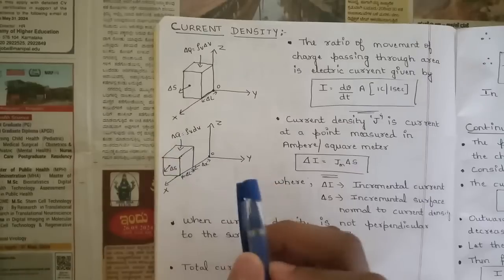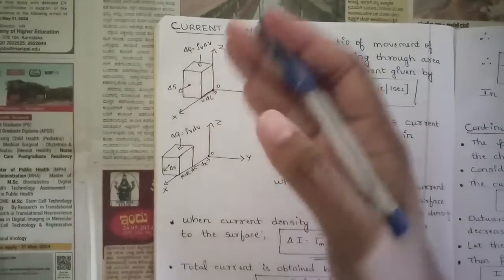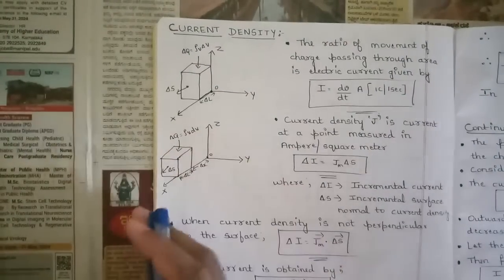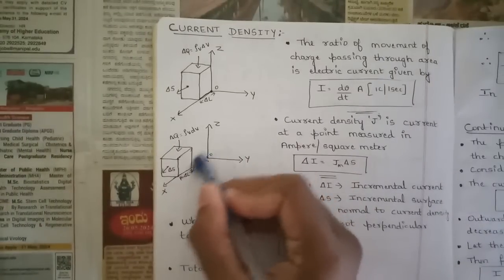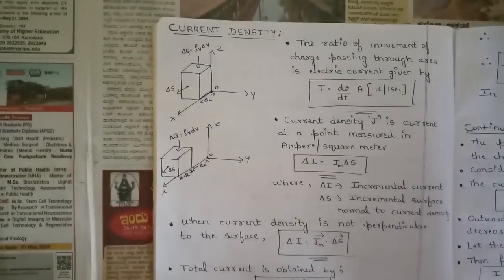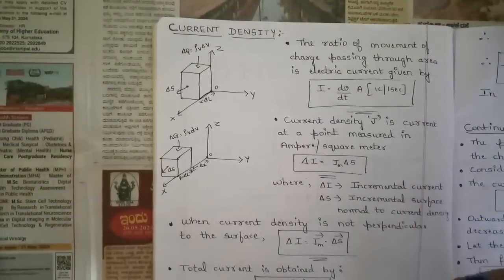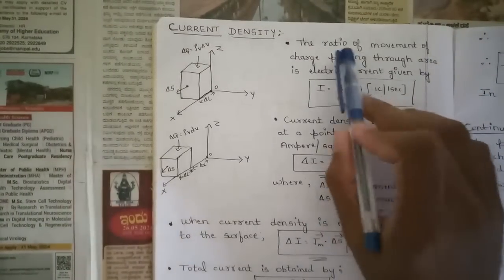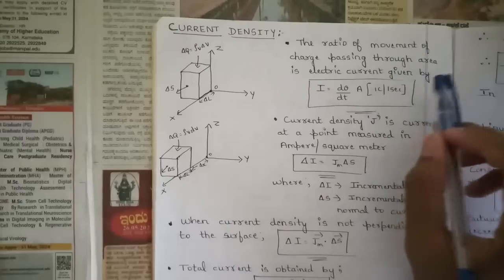All the other things remain the same. Now let's calculate the current density when the object is moved forward in a particular direction. When this object is moved forward and the path Delta X is created, we use Delta X to find some parameters — that is, current density. Now let's get to the derivation part. The ratio of movement of charge passing through the area is electric current.